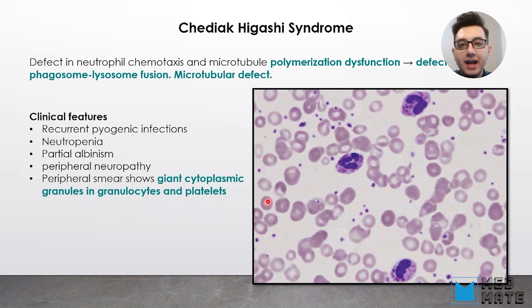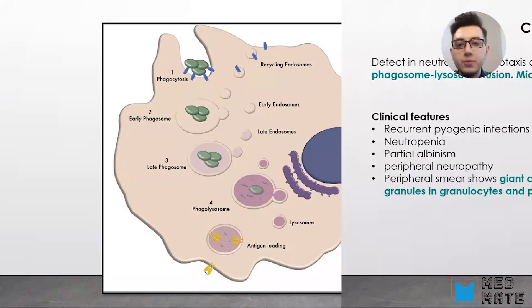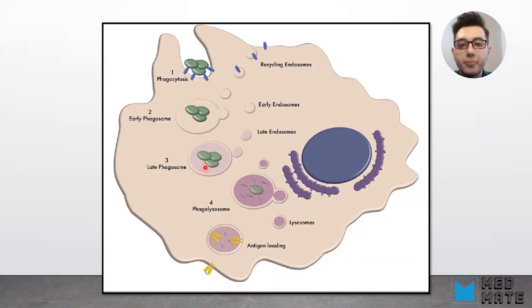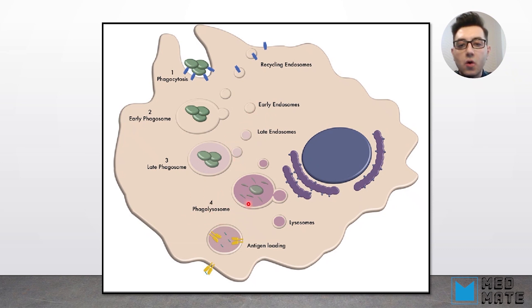A syndrome correlated with this is Chediak-Higashi syndrome, which involves a defect in neutrophil chemotaxis and microtubule polymerization dysfunction. This causes a defect in phagosome-lysosome fusion due to the microtubule defect, which impairs trafficking of lysosomes and formation of the phagolysosome in the cell.